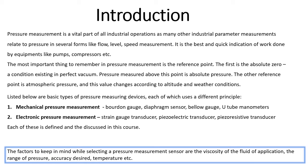Pressure is a vital parameter to be measured because pressure measurements work as inputs to control systems. In most process plants, control systems are really important for protection systems to work properly, and hence to avoid any mishaps or incidents.